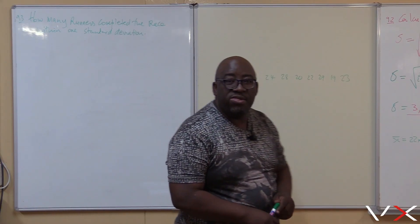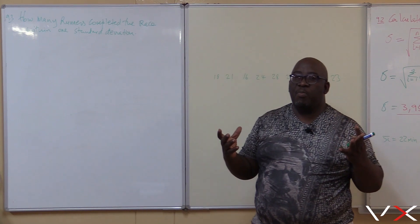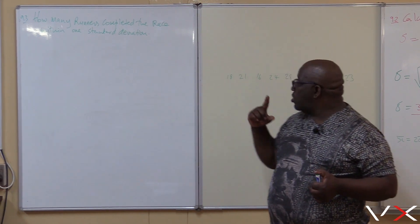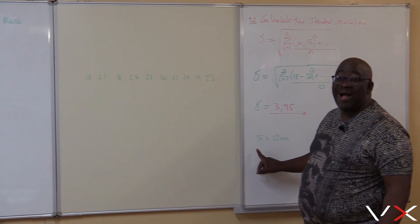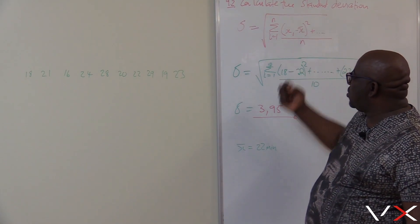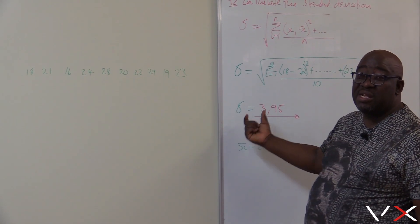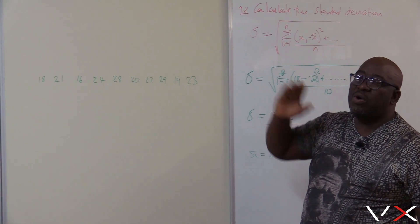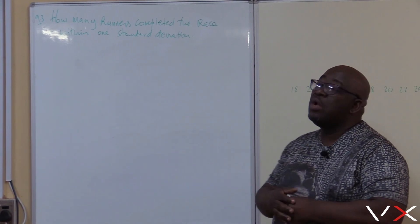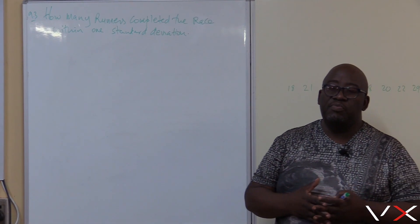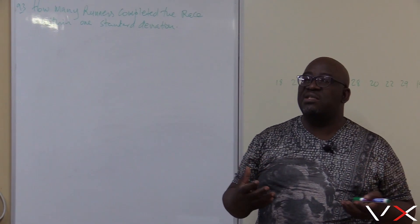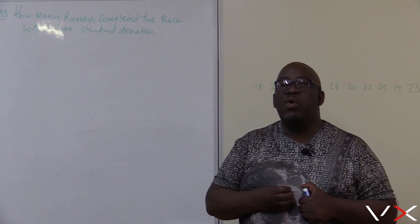Now let's move to the third part of the question. We calculated X bar — the average — as 22 minutes, and the standard deviation. The third question asks: how many runners completed the race within one standard deviation?